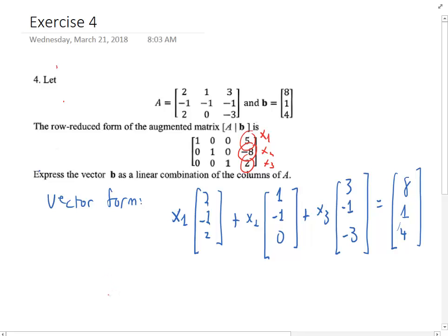Your answer is 5 times [2, -1, 2] plus negative 8 times [1, -1, 0] plus 2 times [3, -1, -3] is equal to [8, 1, 4].